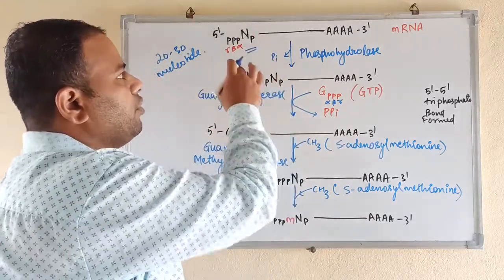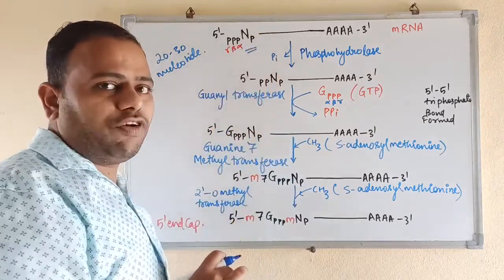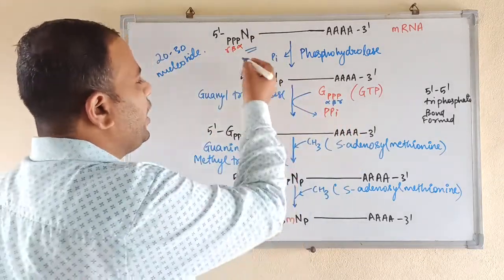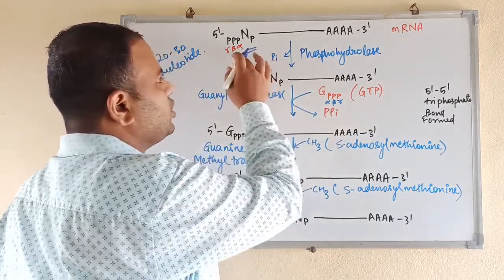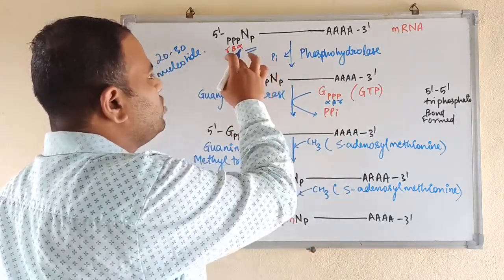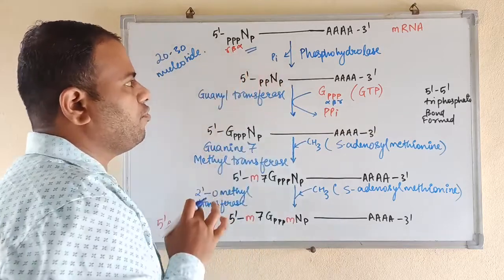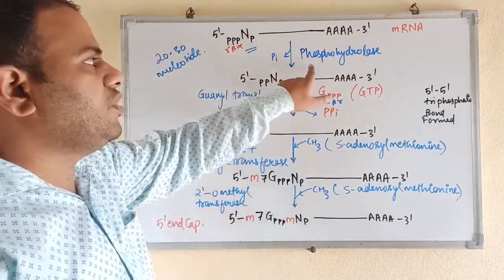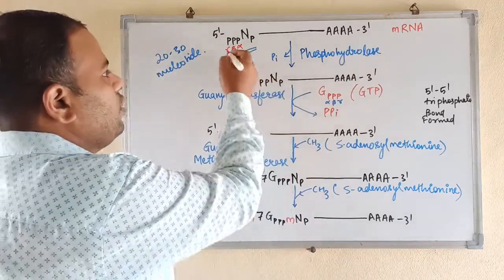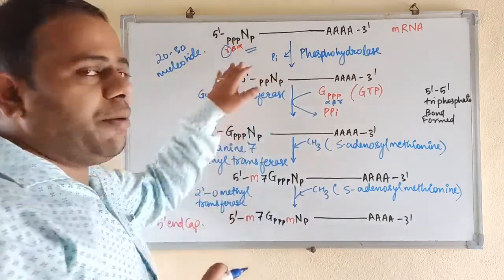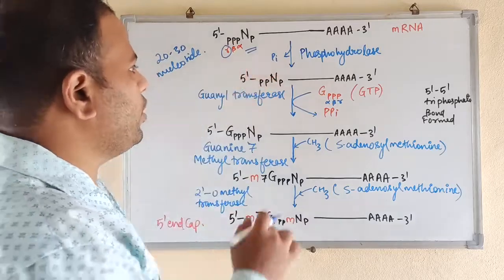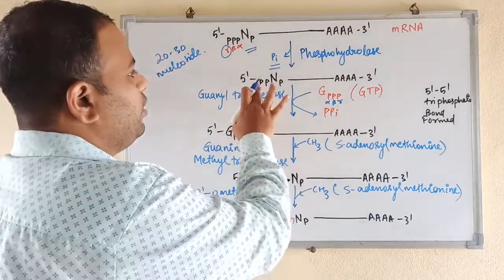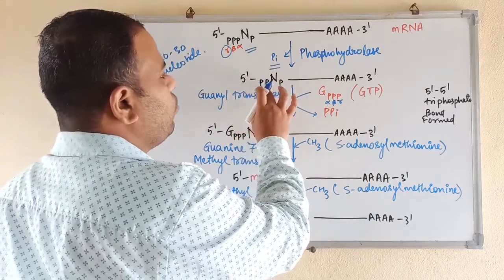There is a nucleotide at the 5 prime end, therefore it is taken as nucleotide triphosphate because always the first nucleotide will be in triphosphate form. The first phosphorus group attached to the ribose sugar is alpha phosphorus, then beta phosphorus, and then gamma phosphorus. The process of capping initiates with phosphohydrolase — one phosphate group, the gamma phosphorus from the mRNA 5 prime end, is removed. This inorganic phosphate is removed, and now it becomes double-P with only alpha and beta phosphorus remaining.